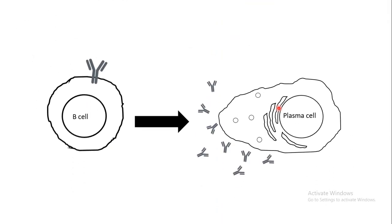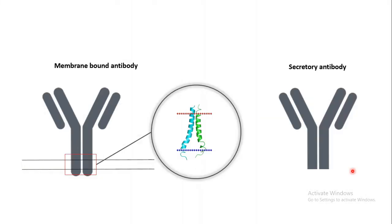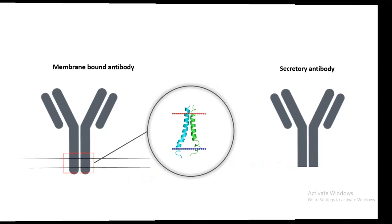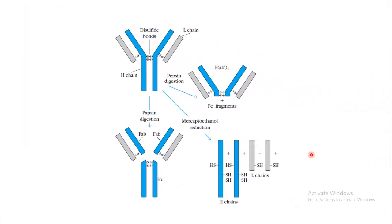B cells have membrane-bound antibody, and upon activation, B cells sometimes get transformed into plasma cells. Plasma cells are secretory cells that secrete antibody. The difference between a membrane-bound and a secretory antibody is that in a secretory antibody, you don't have the transmembrane alpha-helical domain which tethers the antibody to the membrane — that is why secreted antibodies can be easily secreted.